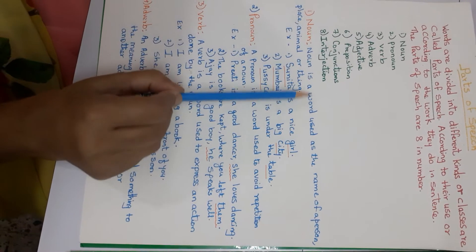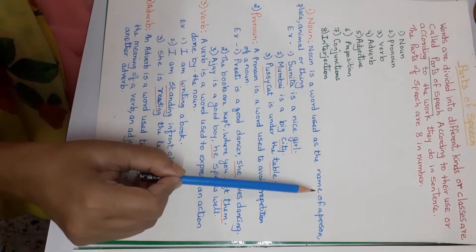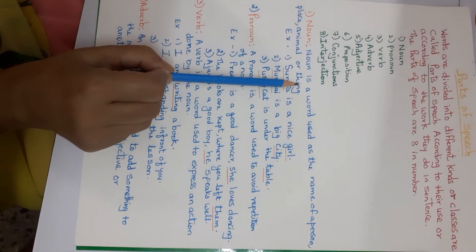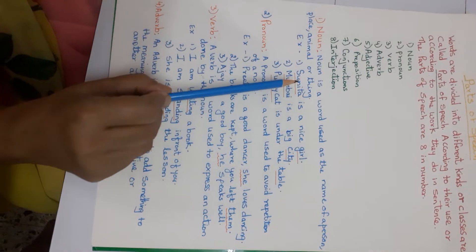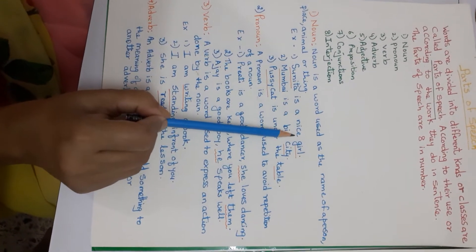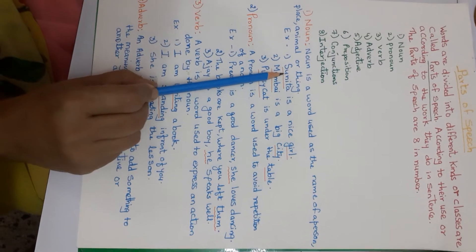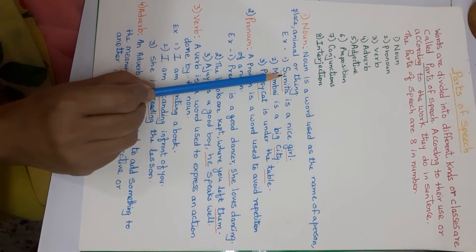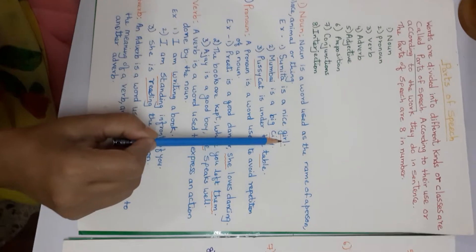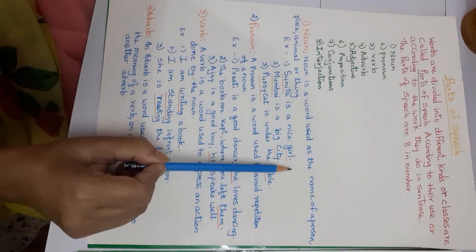What's a noun? Noun is a word used as the name of a person, place, animal or thing. For example, Sunita is a nice girl. Sunita is a noun. Girl is also a noun, but it's a common noun.